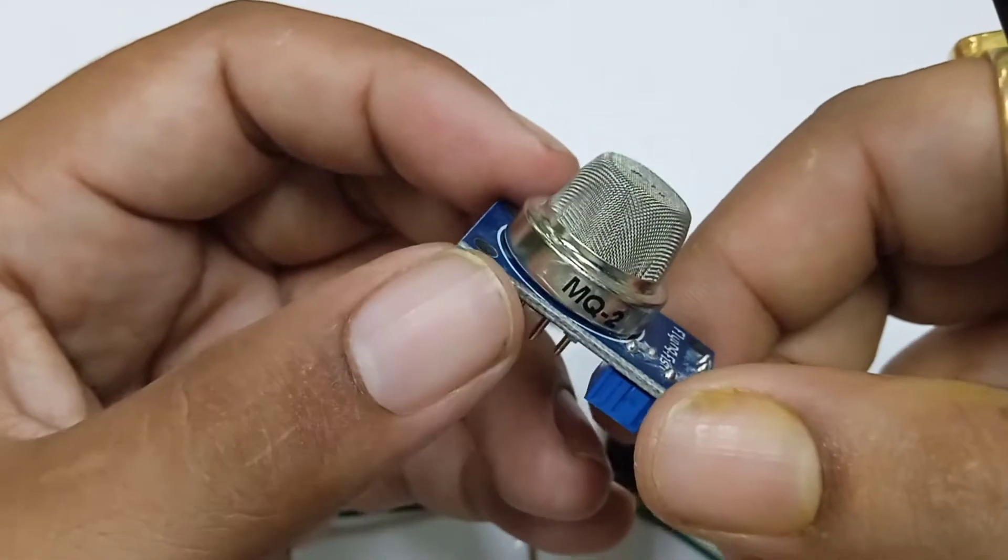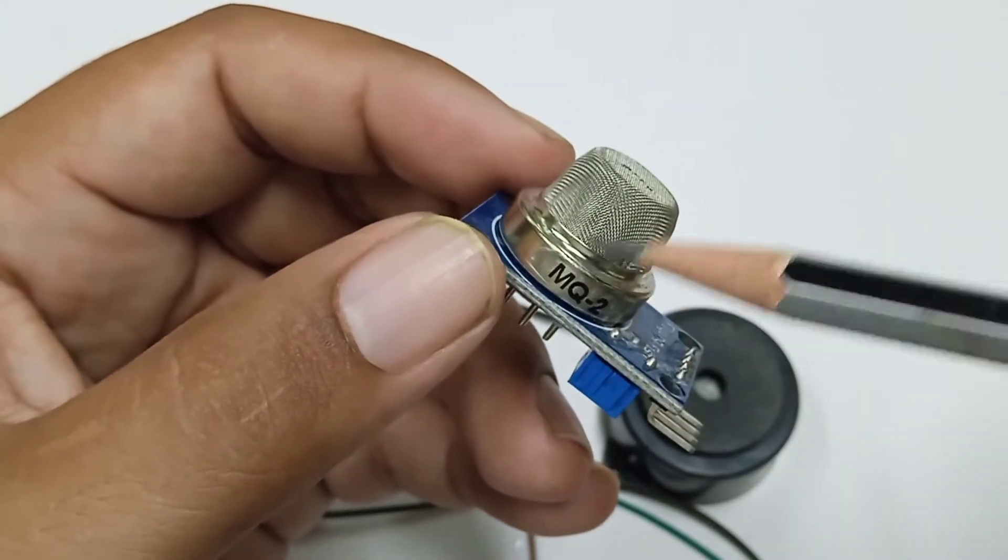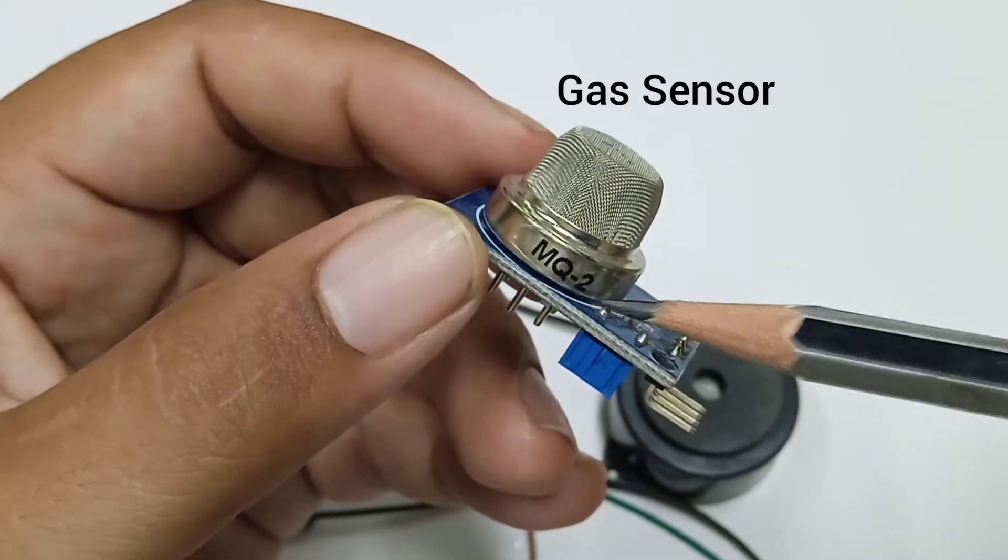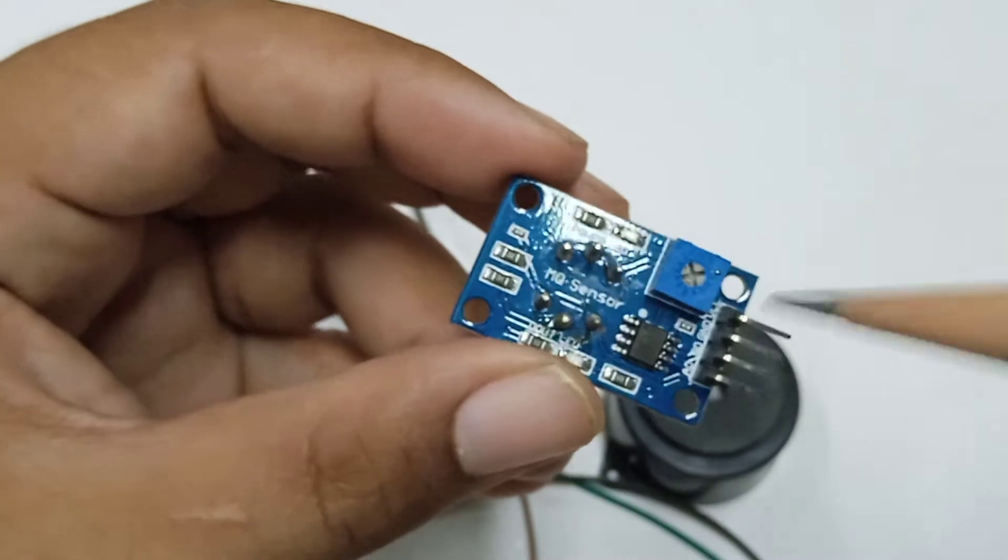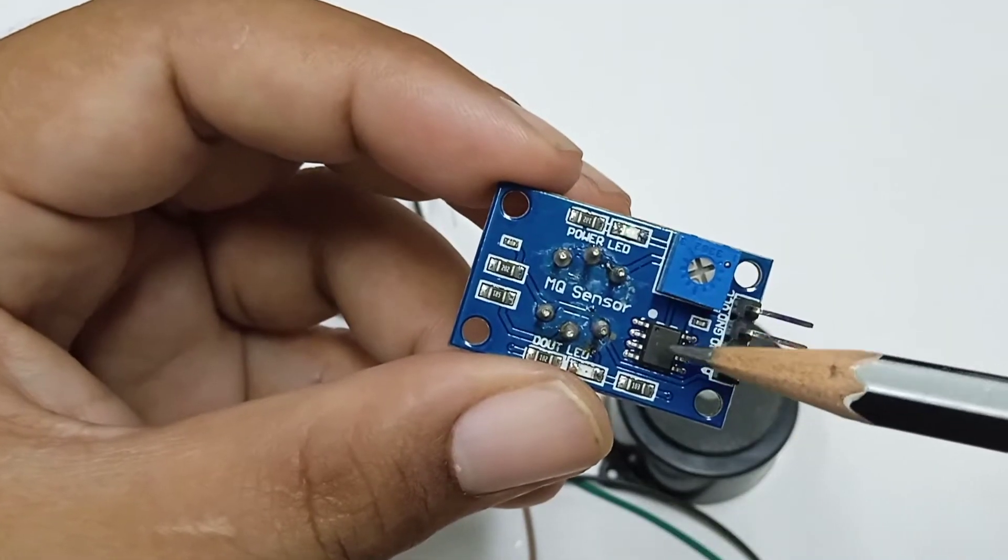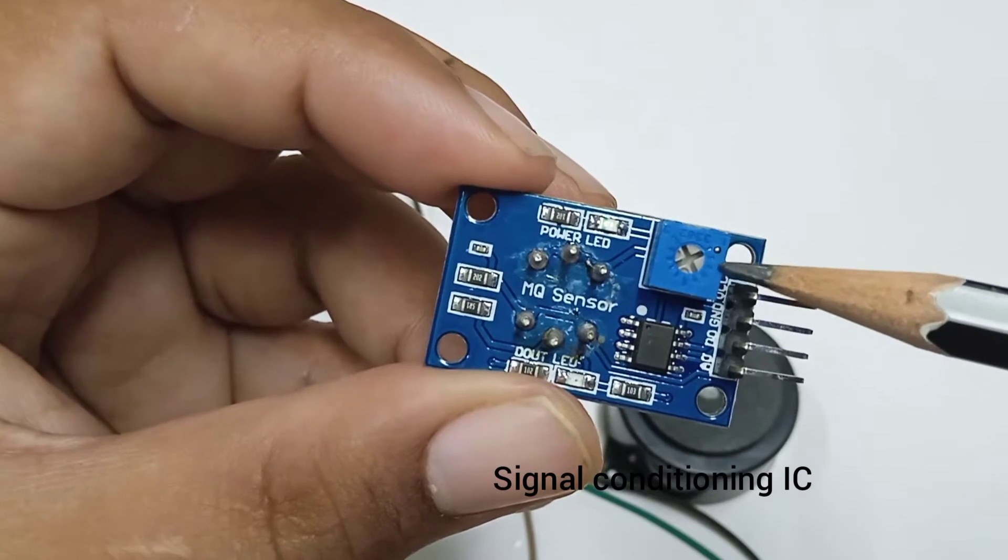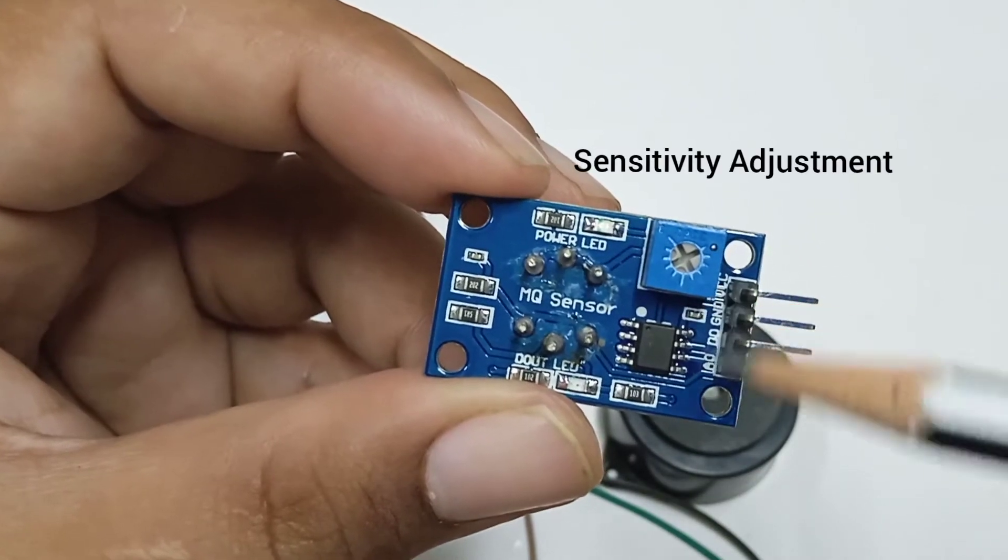This is a module. This module consists of - you can see this is the gas sensor and this is the filter and this is the MQ2 sensor. And in this board we have some signal conditioning circuit IC and one preset. This is used to set the sensitivity of the particular gas sensor module.